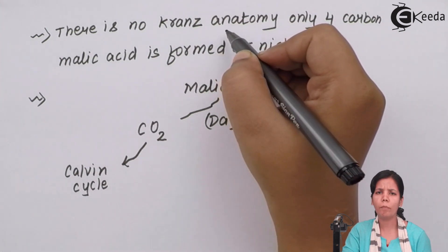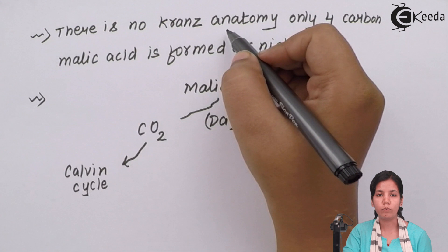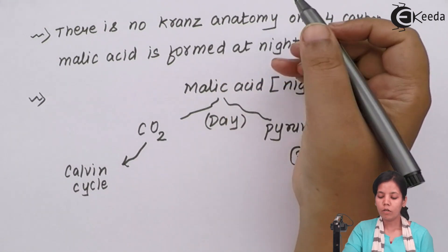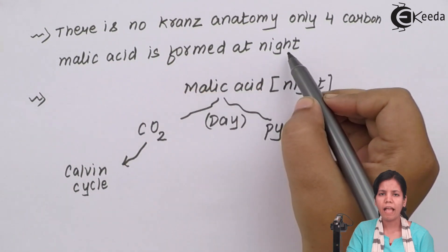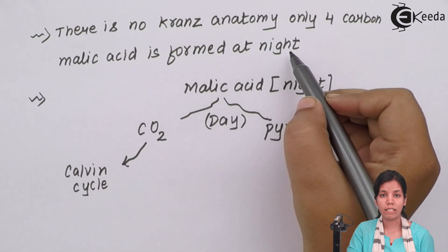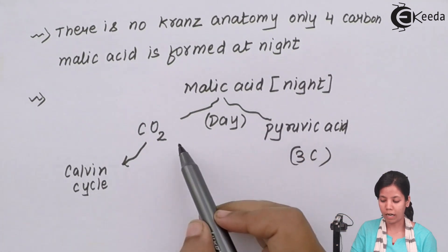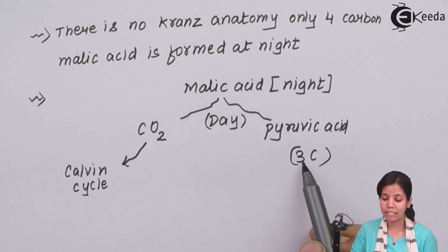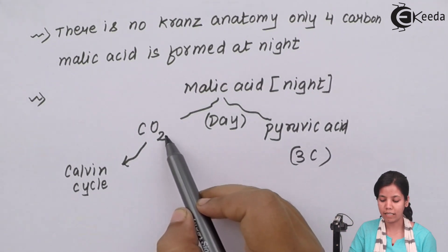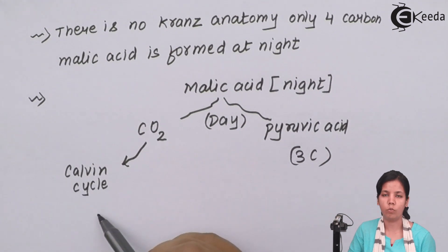In CAM plants there are no bundle sheath cells, and if there are no bundle sheath cells, obviously RuBP won't be present. PEP carboxylase will not be present, and we know PEP carboxylase has an affinity to absorb carbon dioxide at less than 50 ppm. The first stable product formed during this cycle is malic acid, which is formed at nighttime. At nighttime malic acid is stored, and when daytime comes, malic acid is transported and converted into carbon dioxide and pyruvic acid.